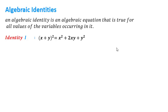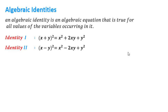The second identity is (x − y)² = x² − 2xy + y². If you compare it with the first identity, there is a change of sign of y, and similarly in the expression there is a change in the sign of 2xy.